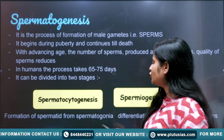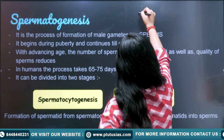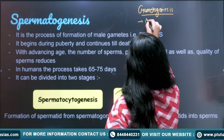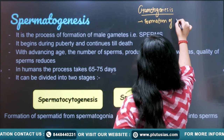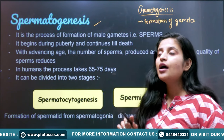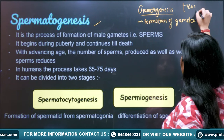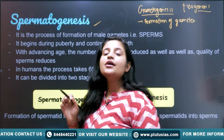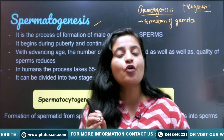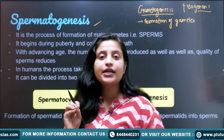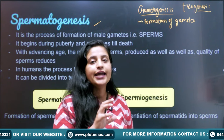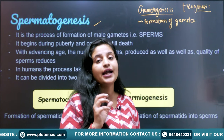First you should know what is gametogenesis. Gametogenesis is the formation of gametes and has two types: the first is spermatogenesis and the second is oogenesis. Spermatogenesis is the process of formation of male sperm in the male body, which takes place in the male reproductive organ called the testes. Oogenesis is the process of formation of ova in the female reproductive system, that is the ovary.